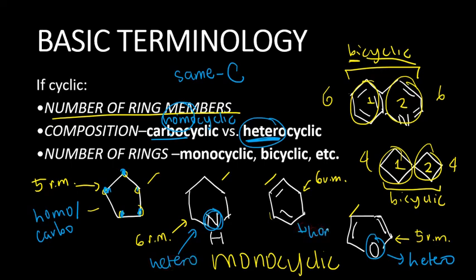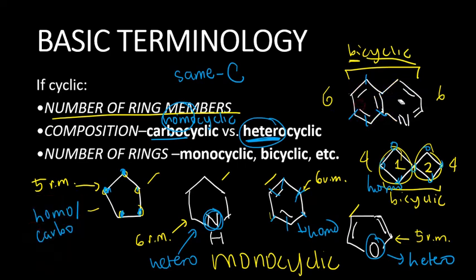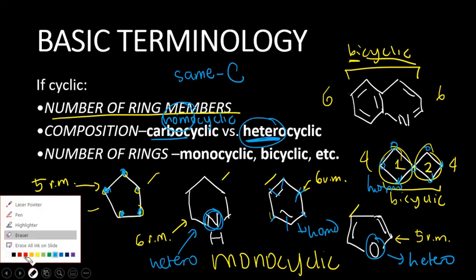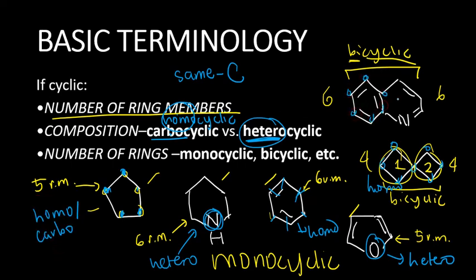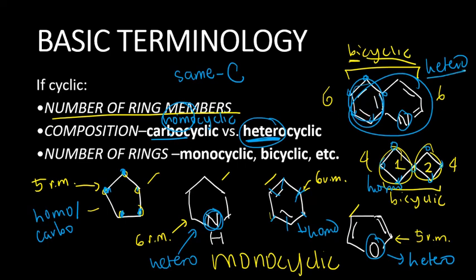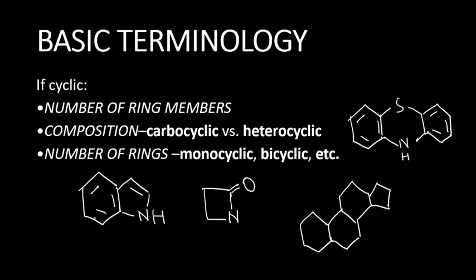This one is homocyclic because all are carbons. All here are carbons also, so this is homocyclic. Now, it may be a good question to ask: how about in this case where this ring has all carbons — so this part is carbocyclic — but the right side has a nitrogen? In that case, the heterocyclic part wins. So this entire thing is heterocyclic. Meaning, even if I have a carbocyclic or homocyclic part there, we don't care — the entire thing is heterocyclic.